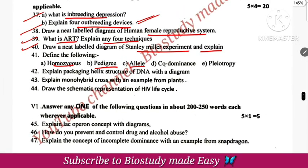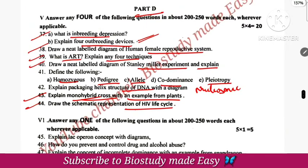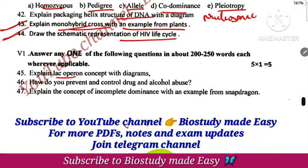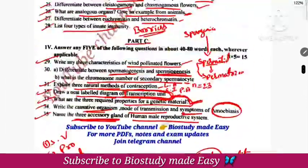Definition of homozygous, pedigree, allele, codominance, and pleiotropy. Packaging of helix structure of DNA — nucleosome model. Monohybrid cross with an example from plants. Schematic representation of HIV life cycle — retrovirus replication, any four answers. These are easy questions. Lac operon — very easy. How to prevent drugs and alcohol abuse — direct question from human health and diseases. Concept of incomplete dominance — very very easy. All questions were easy, except some MCQs which were difficult.